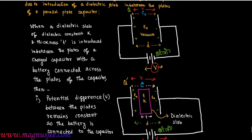The potential difference remains constant, and Q prime is the final charge on the plate with the dielectric slab. Here, C is greater than C0, Q prime is greater than Q, and U prime is greater than U, but the potential difference V remains constant. Capacitance increases, charge increases, and energy also increases, but potential difference V remains constant in this case.